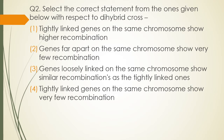Question 2. Select the correct statement from the ones given below with respect to dihybrid cross. Option 3: Tightly linked genes on the same chromosome show higher recombination. Option 4: Genes far apart on the same chromosome show very few recombination. Option 5: Genes loosely linked on the same chromosome show similar recombination as the tightly linked ones. Option 6: Tightly linked genes on the same chromosome show very few recombination. The correct answer is option 4 — tightly linked genes on the same chromosome show very few recombination.